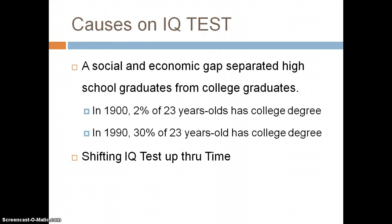The causes on the IQ test. There was a slight economic gap separation of high school grads from college grads. In 1900, only 2% of 23-year-olds had a college degree. By the 1990s, 30% of 23-year-olds had graduated from college. As more people go to college, you're actually skewing your data to the right, shifting the mean up because more people are more educated and more well-rounded. This goes back to the Greek ideal of everyone having math, science, arts, and PE. The more well-rounded you are, the higher your IQ — so the higher the percentage of people with college degrees, the more likely the IQ mean will shift up.